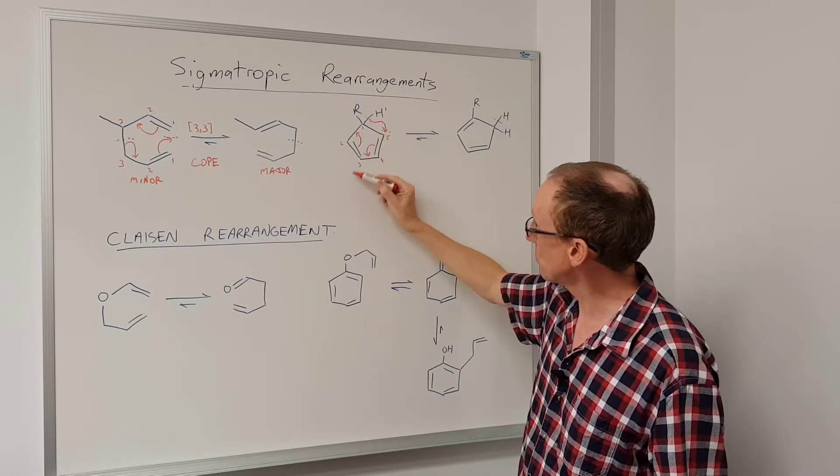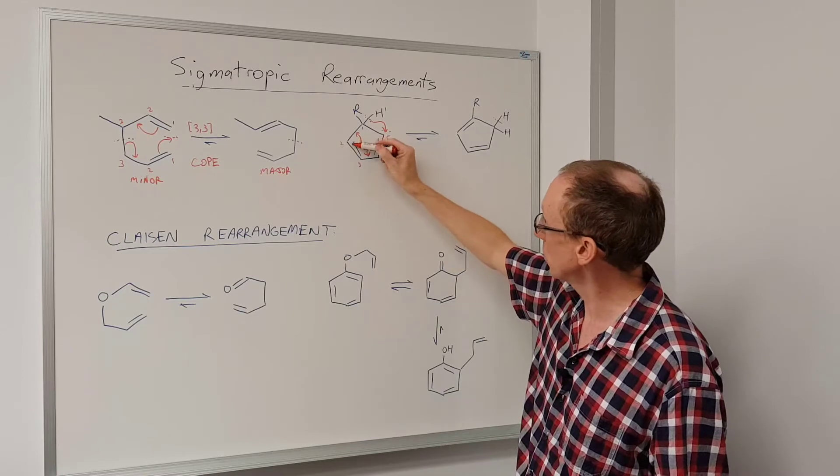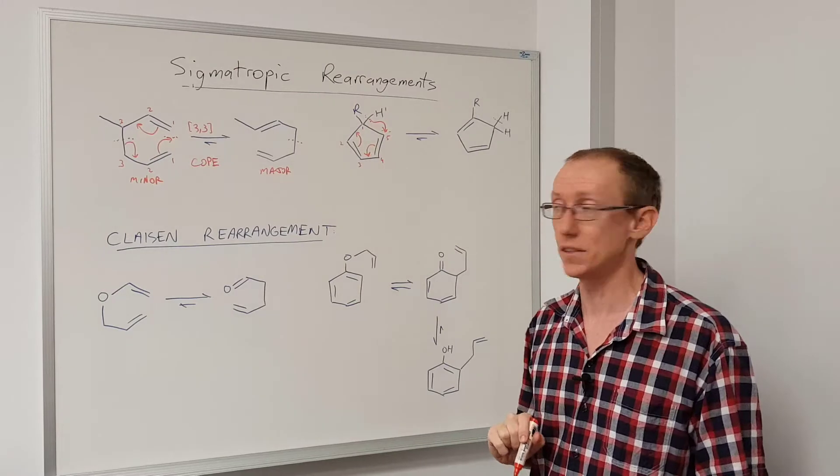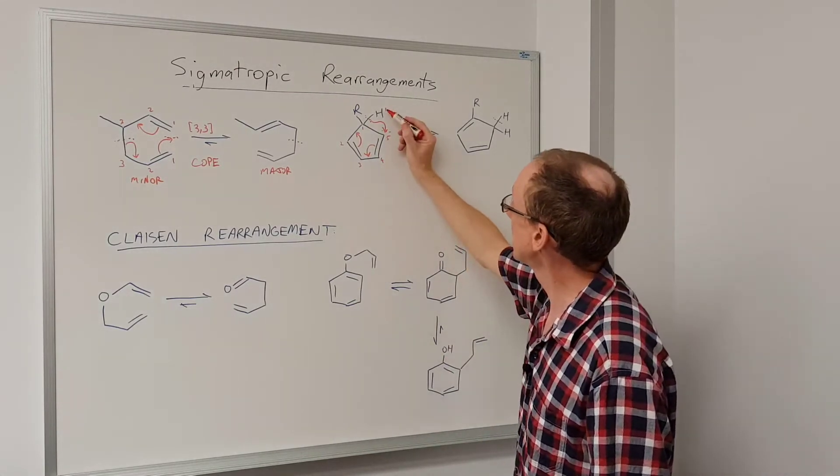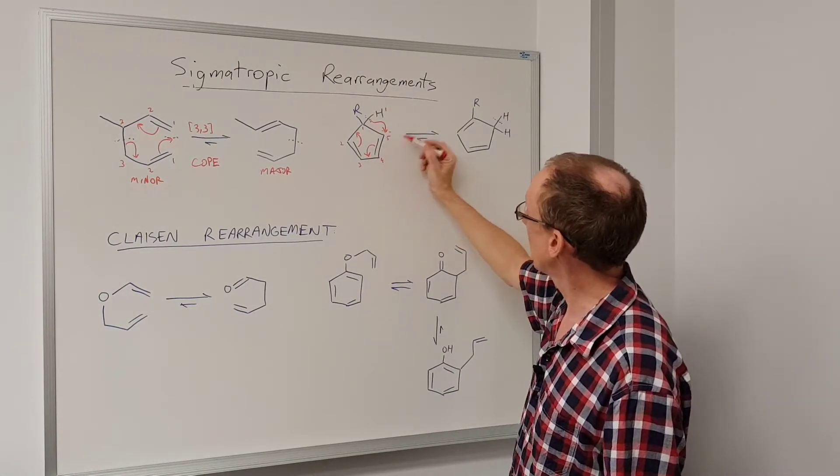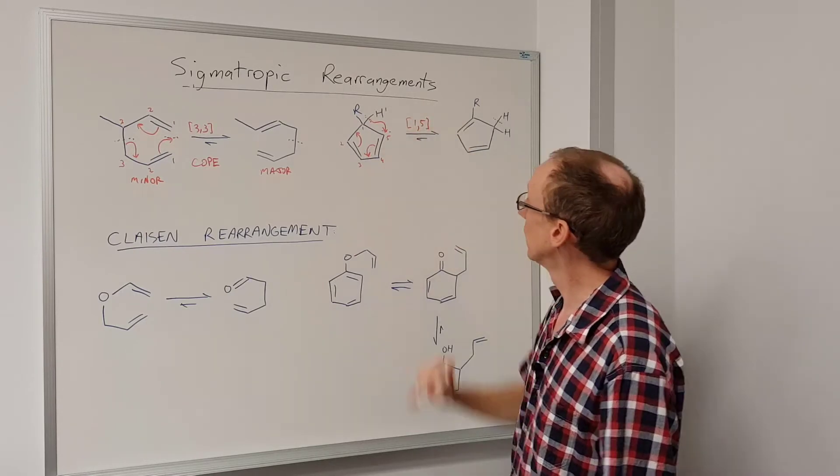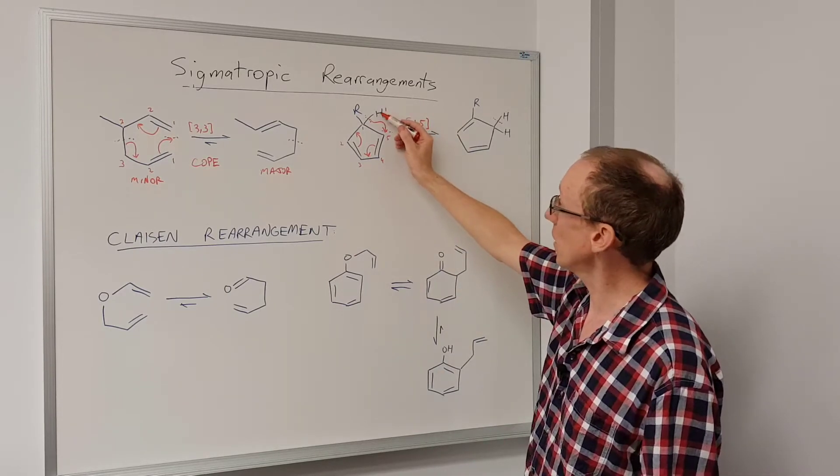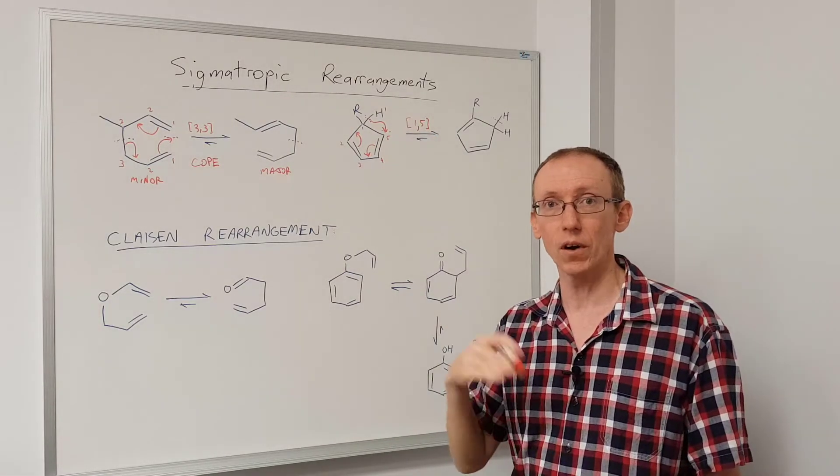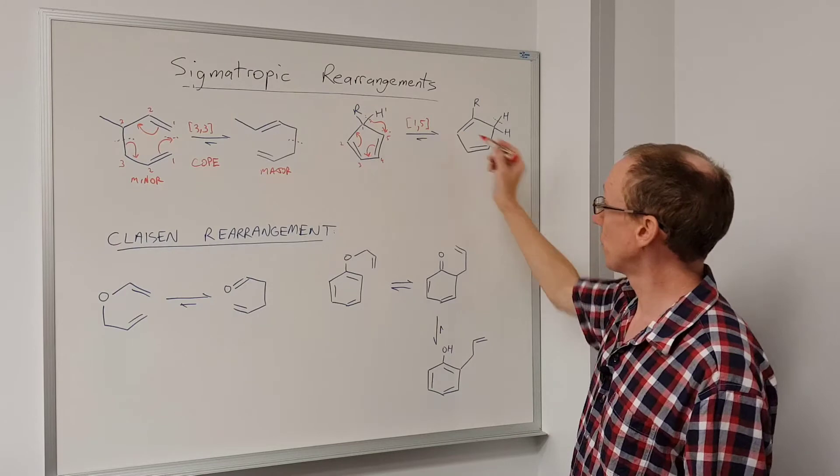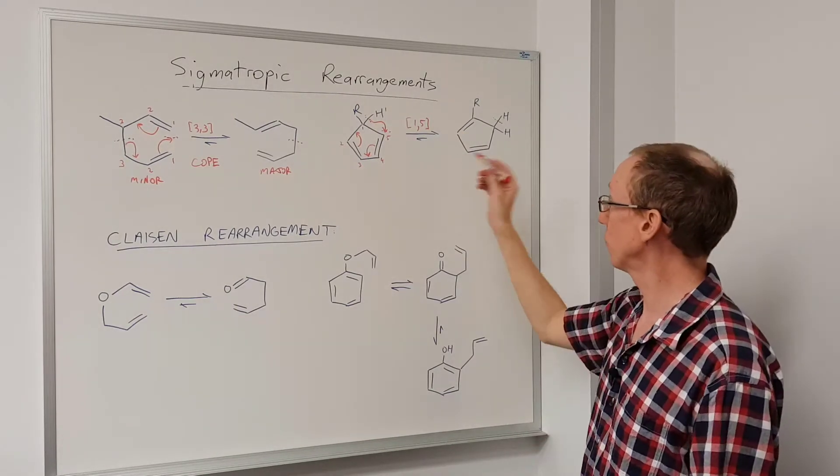If we had other substituents here, we just look at the atoms in that chain that is part of the transition state. So this is a 1,5 sigmatropic rearrangement. It's a hydrogen that's moving, so we could also call it a 1,5 hydride shift.